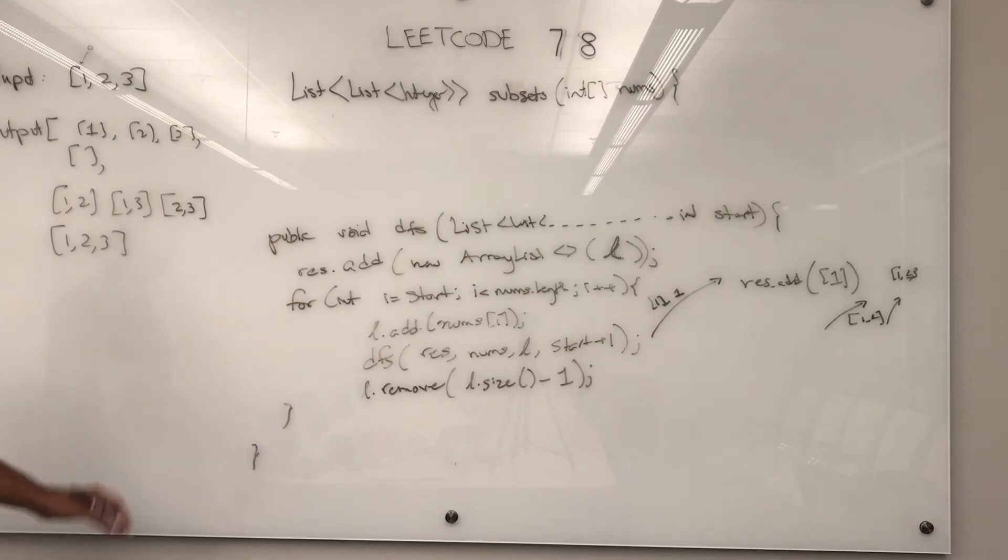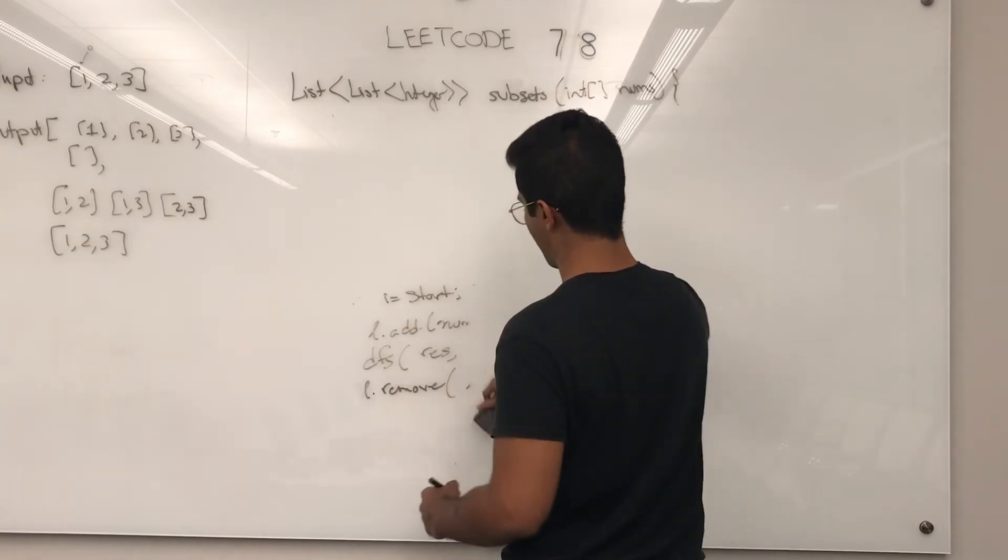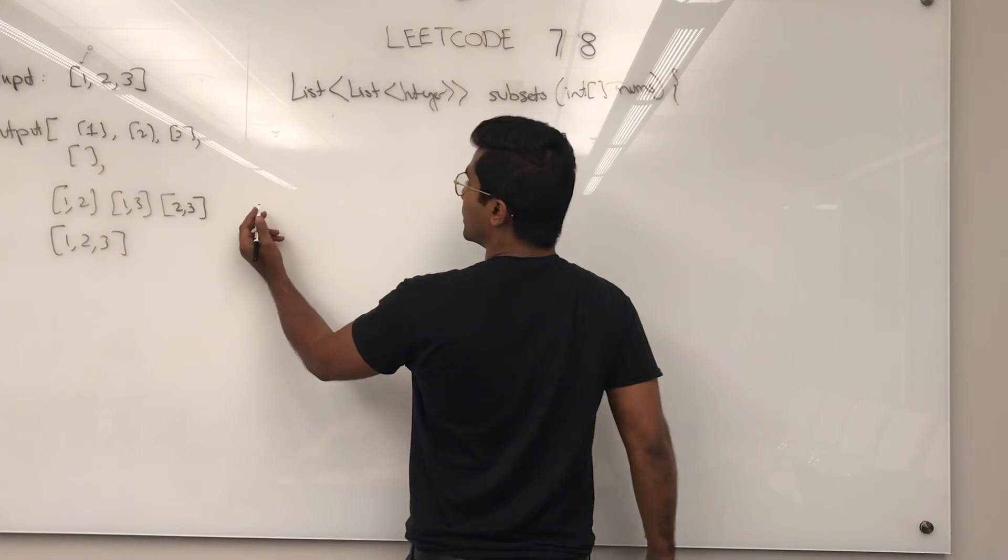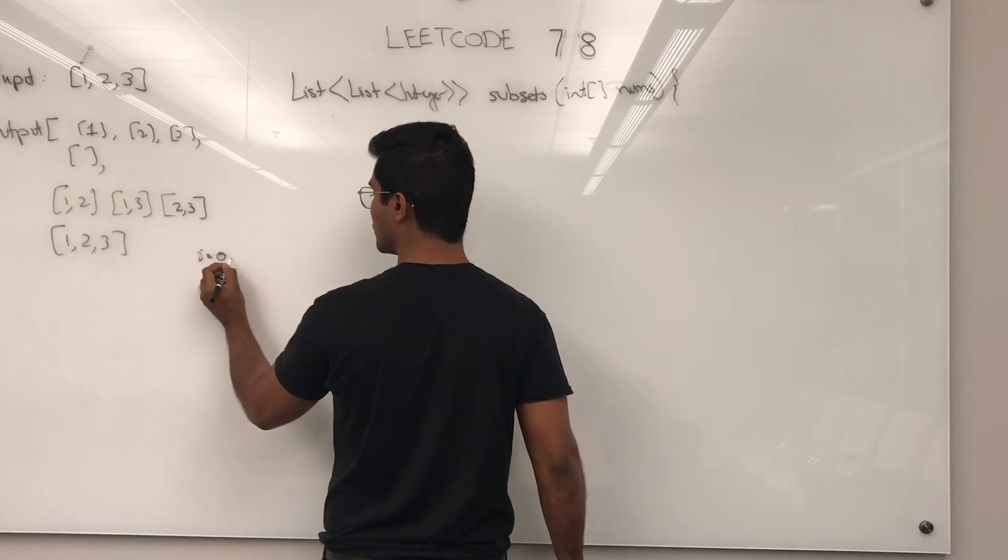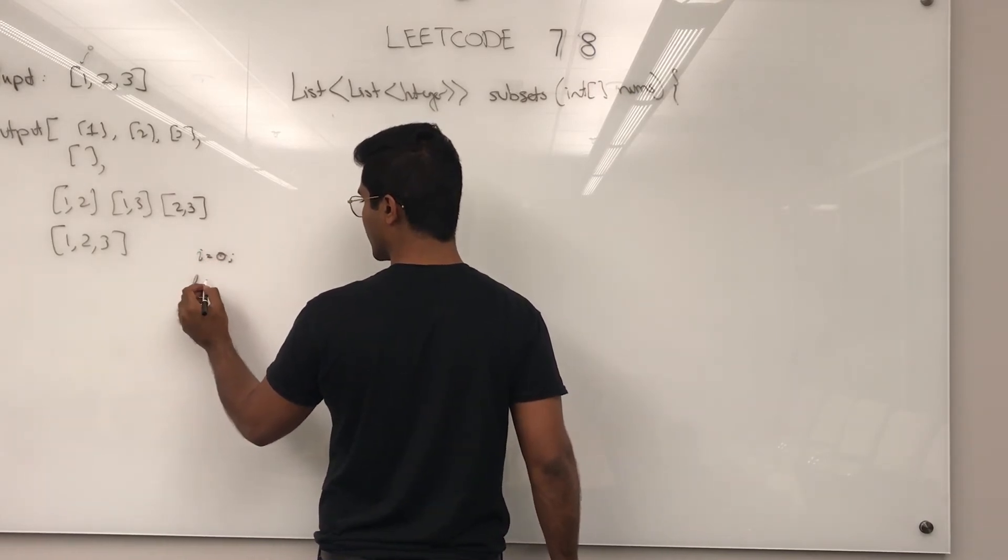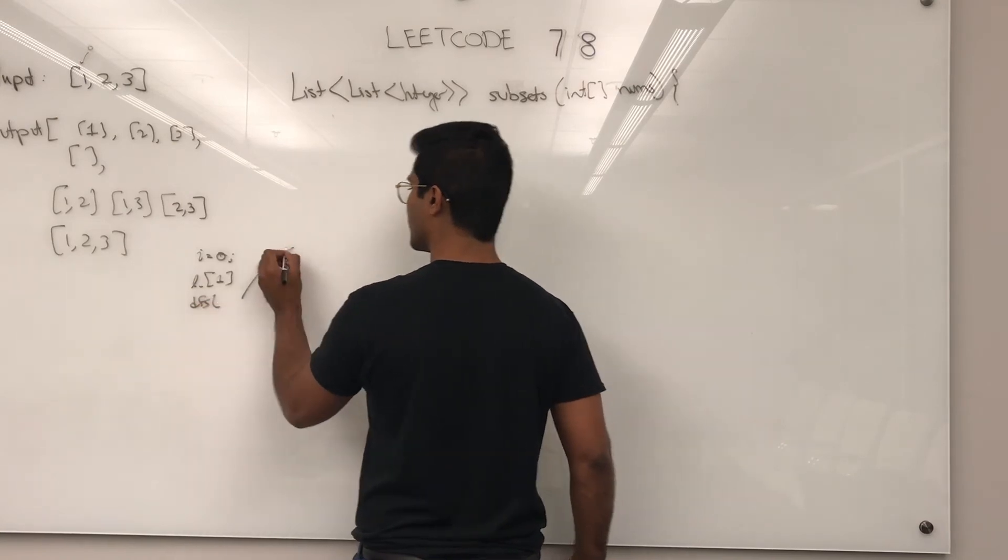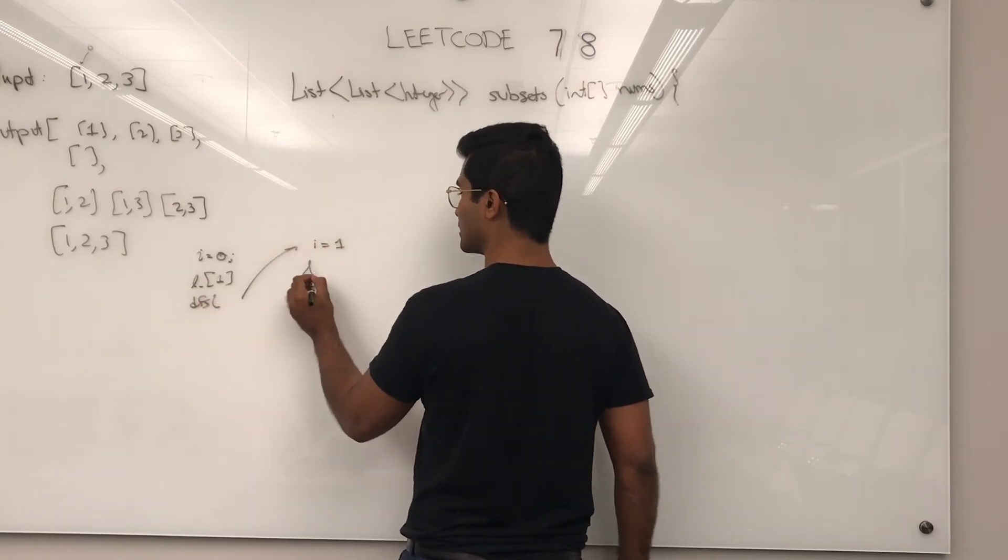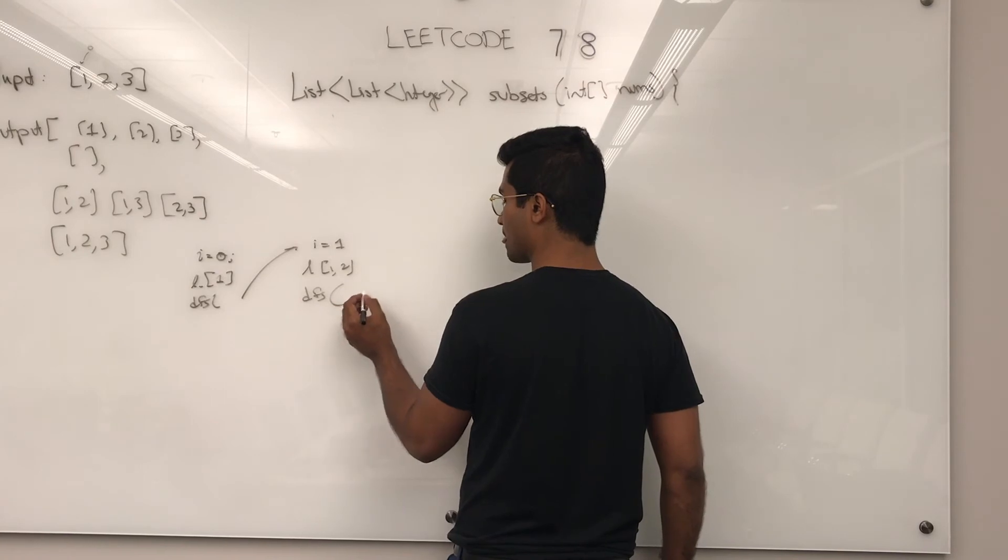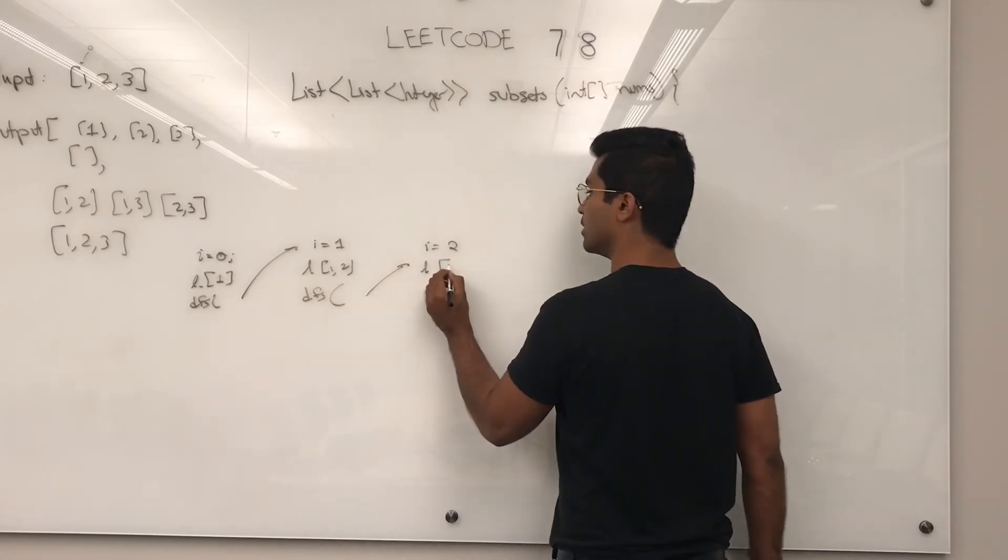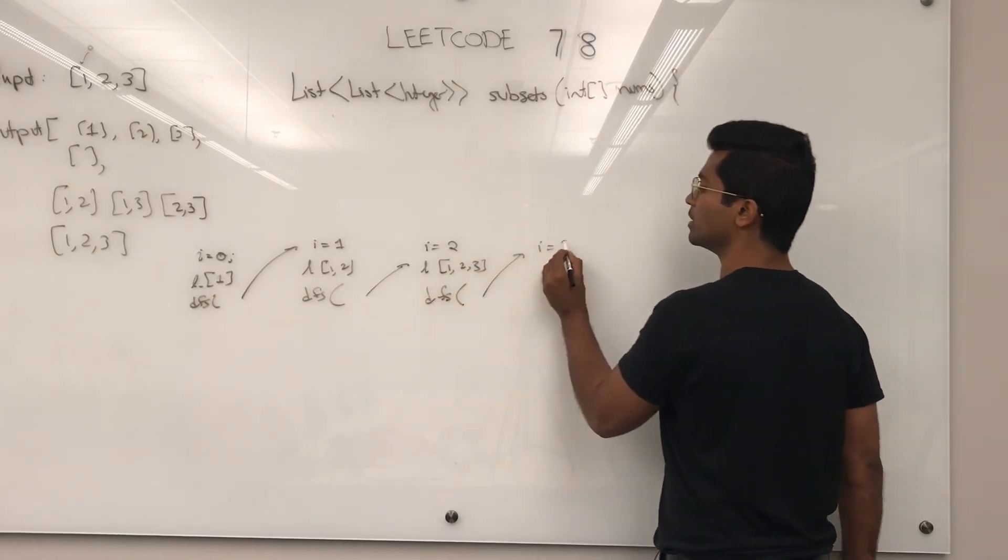So, l, i is equal to zero, l gets added, l is now one, l has one, and DFS with this guy, i is going to be one, l is going to be one comma two, and DFS with this guy. i is going to be two, l is going to be one comma two comma three, DFS with this guy. i is three, and it will enter the for loop. So it's just going to return.